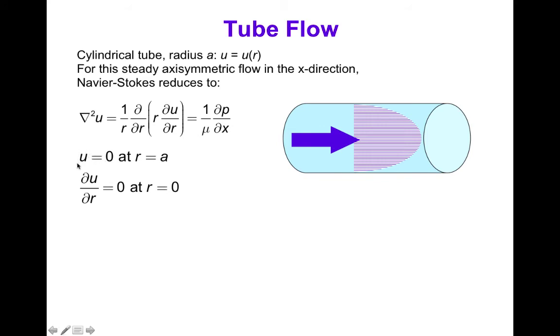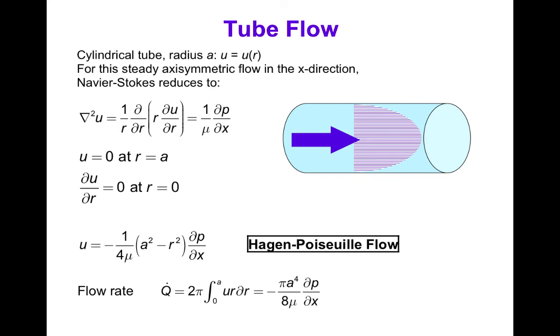This time the two boundary conditions are that u equals zero at r equals a on the boundary, and by symmetry, by axisymmetry, the velocity profile must have a maximum or minimum at r equals zero, so we have del u del r equals zero at the center line, r equals zero. And so again, if we integrate this equation, we get that u equals 1 over 4 mu times a squared minus r squared del p del x, which is the same form of the parabolic flow profile that we derived for the channel, just with a different coefficient here. And this kind of parabolic tube flow profile is called Hagen Poiseuille flow, or commonly just Poiseuille flow for short.